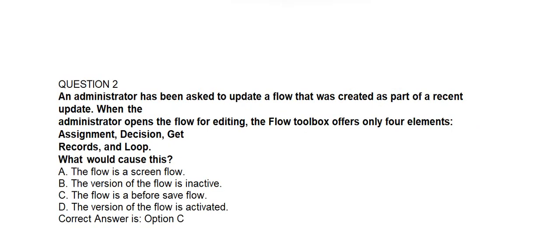Question number two. An administrator has been asked to update a flow that was created as part of a recent update. When the administrator opens the flow for editing, the flow toolbox offers only four elements: Assignment, Decision, Get Records, and Loop. What would cause this? Option A: The flow is a screen flow. Option B: The version of the flow is inactive. Option C: The flow is a before-save flow. Option D: The version of the flow is activated. Correct answer is Option C: The flow is a before-save flow.